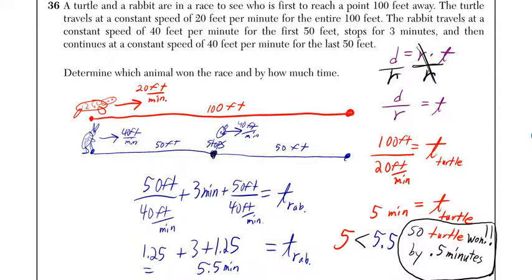So for the turtle, we do 100 feet divided by 20 feet per minute. The units work out so that the feet cancel. You have 1 over a minute on the bottom, but you flip it when it's on the bottom, just the way you do dividing by fractions. 1 over 1 minute will become a minute over 1, so just 1 minute is the units. Then 100 over 20 is 5, so the turtle took 5 minutes.